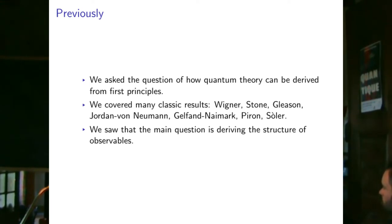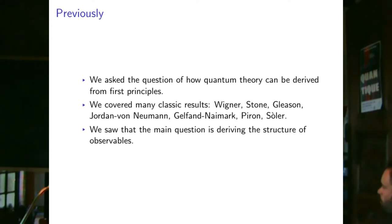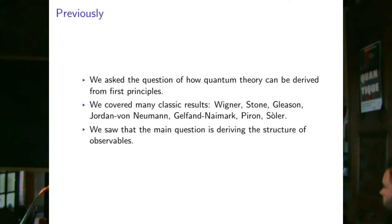We saw Wigner's Theorem, Stone's Theorem on one-parameter unitary groups, Gleason's Theorem, the Jordan-von Neumann-Wigner classification of Jordan algebras, and the Gelfand-Naimark embedding theorem of abstract C*-algebras into concrete C*-algebras. With all these results combined, the main question that really remains is deriving the structure of observables for quantum theory.